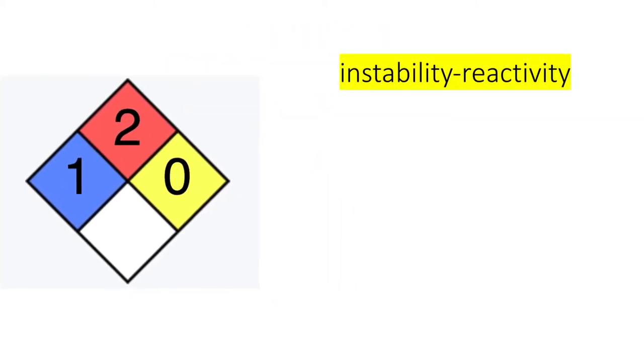The yellow diamond tells you about the molecule's instability or reactivity. This is also on a scale from zero to four where zero tells you that the molecule will not explode when shaken and four tells you it will explode at room temperature if disturbed. Because one octanol has a zero there it means that it's not going to explode as you handle it in the laboratory.